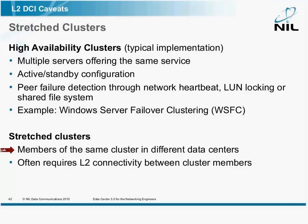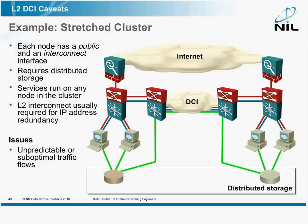The clusters usually share the same IP address between their members. For example, your SQL server should always be reachable on the same IP address, which means that whichever physical server runs the SQL server has to have that IP address, which again means that you need layer 2 connectivity between the cluster members. They all have to be in the same subnet so that they could share IP addresses.